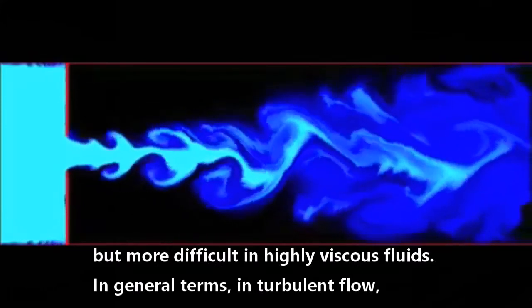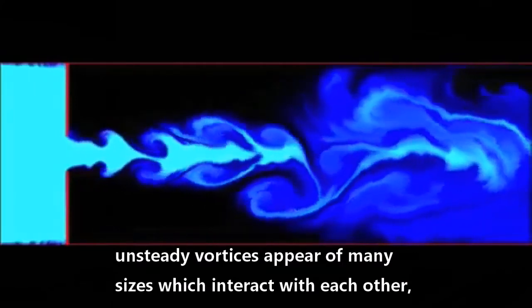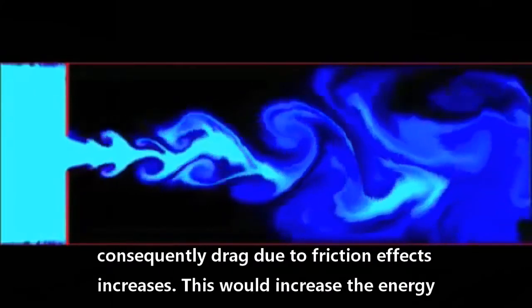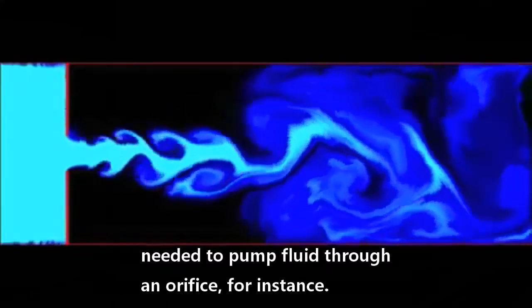In general terms, in turbulent flow, unsteady vortices appear of many sizes which interact with each other. Consequently, drag due to friction effects increases. This would increase the energy needed to pump fluid through an orifice, for instance.